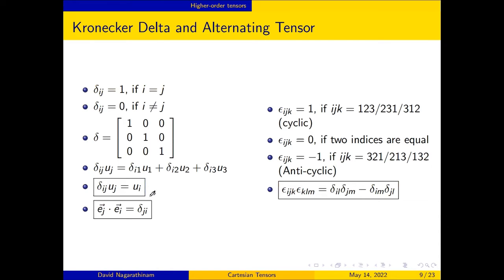When i equals 1, we have delta_11*u1 representing the u1 component. In this manner, the result is obtained. Similarly, e_j vector dot e_i vector equals delta_ji, as you may verify by substituting different values of j and i.